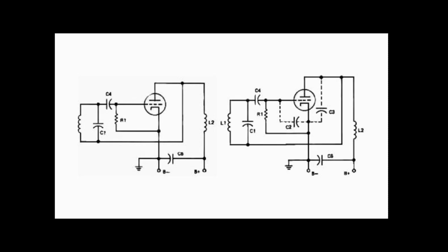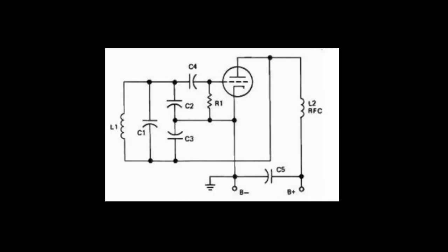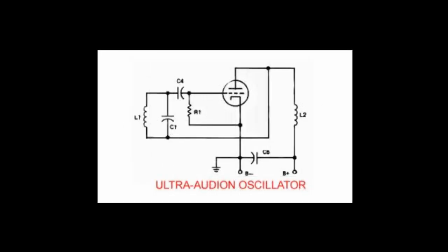But if we redraw the circuit with them shown, it's easier to see that this is, in fact, just a Colpitz oscillator. C2 is the grid to cathode capacity of the tube, and C3 is the plate to cathode capacity of the tube. So when you look at those two capacitors, we have a capacitive voltage divider network just like the original Colpitz. So rather than being a brand new type of oscillator, the Ultra Audion is actually a Colpitz oscillator.